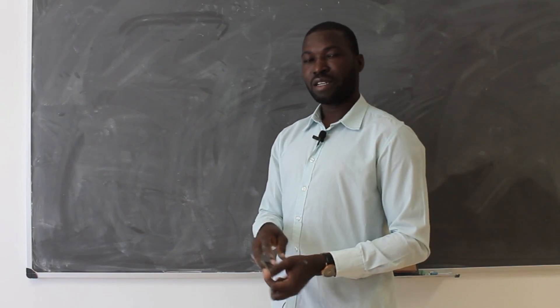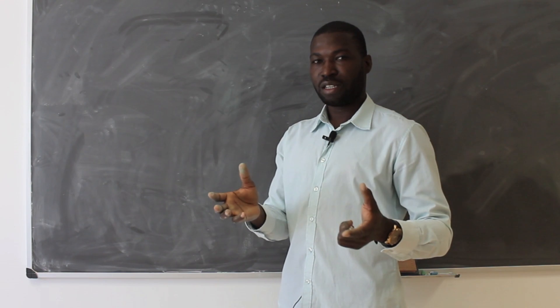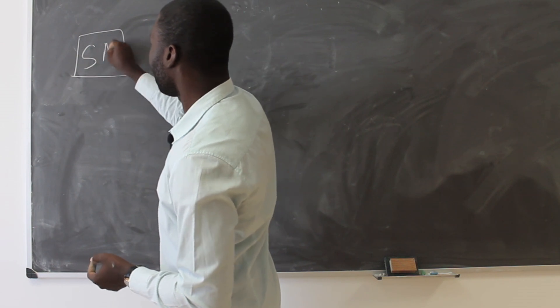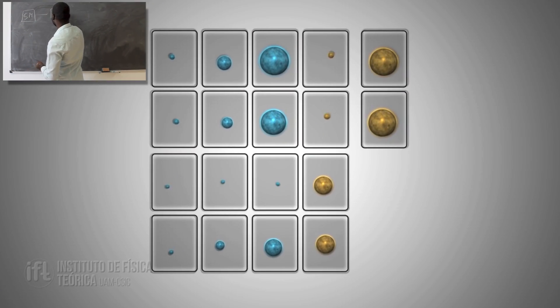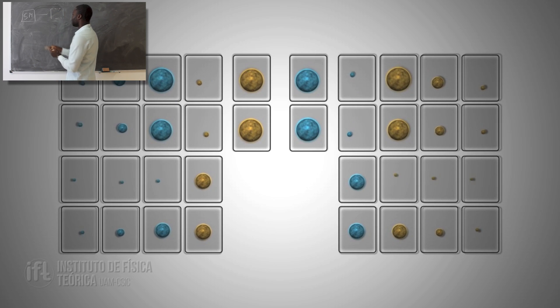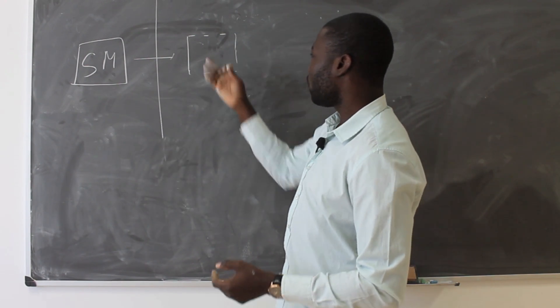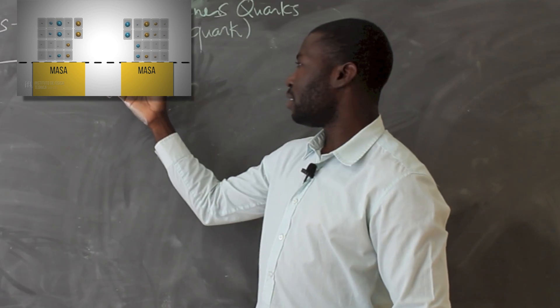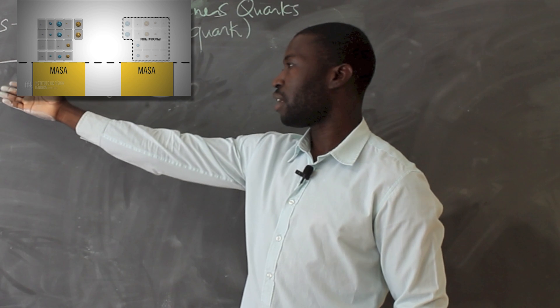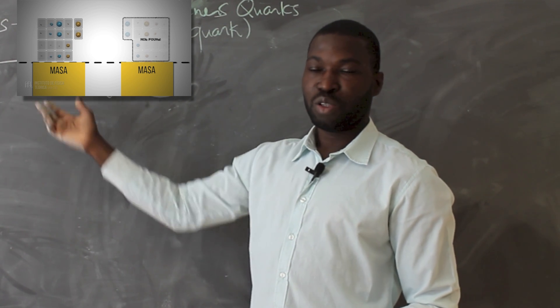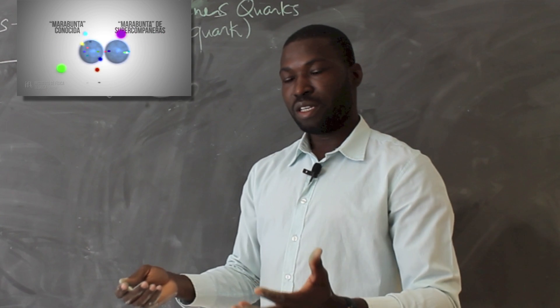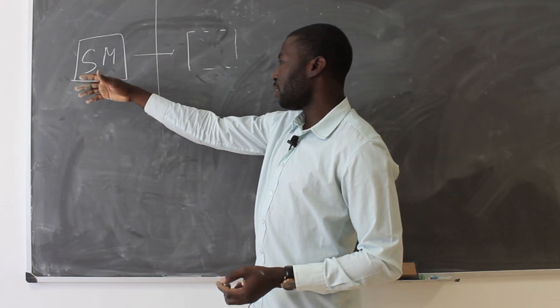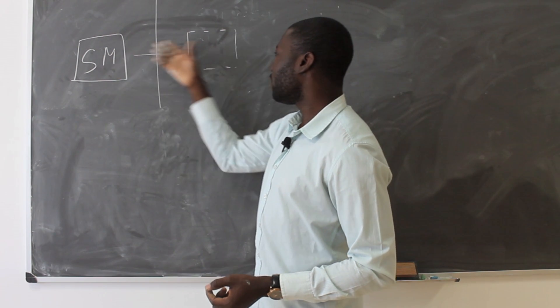So in some sense supersymmetry is kind of duplicating the particle content of the standard model. You have the standard model and then you predict that there is a cousin of the standard model but the problem is that we don't observe such particles. We don't see them. So these particles cannot have the same mass because we don't see them. So what is generally assumed is that supersymmetry is not exact.